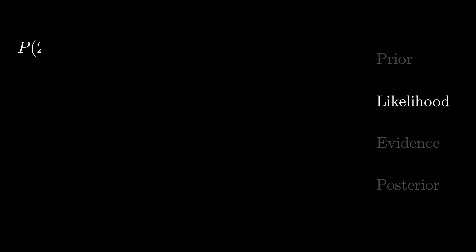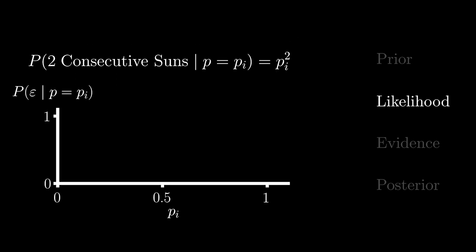What is the probability of two consecutive sunny days given that p equals 0.1? If we assume independence, meaning that the probability of a sunny day does not depend on previous outcomes, then it would be 10% times 10%, or 0.1 squared.